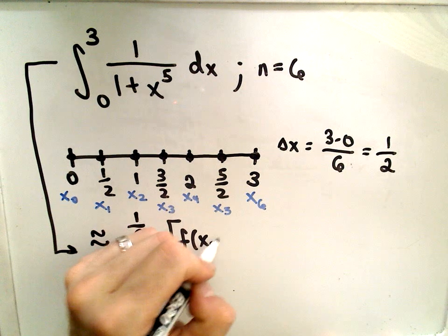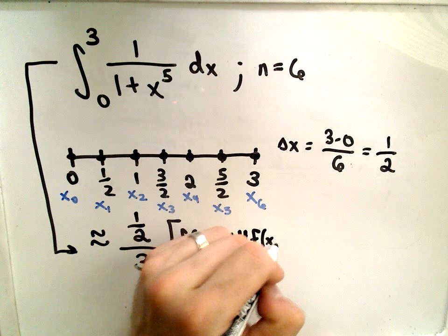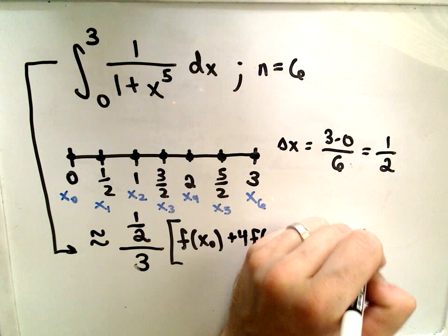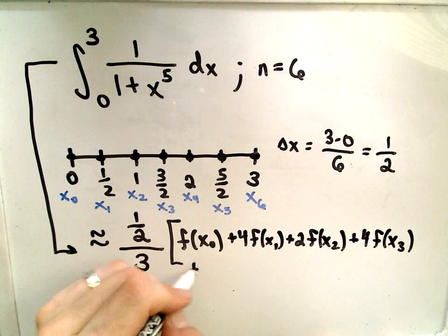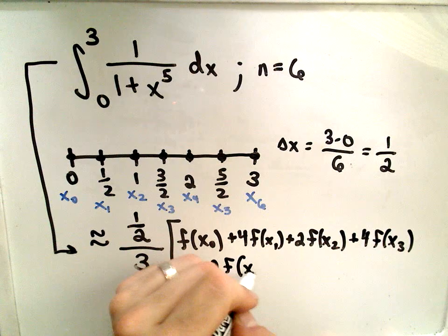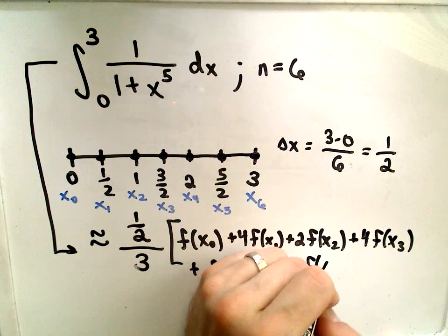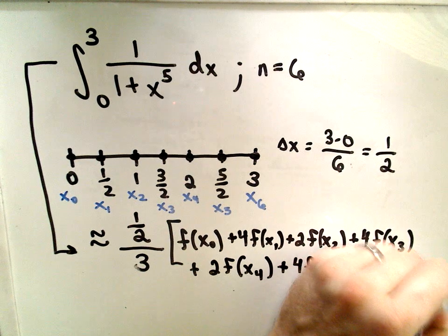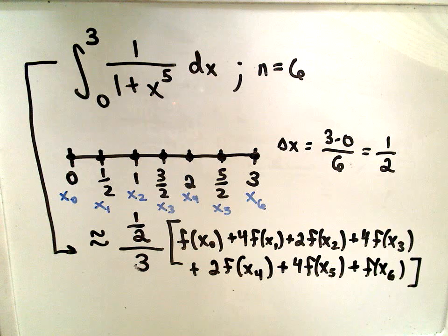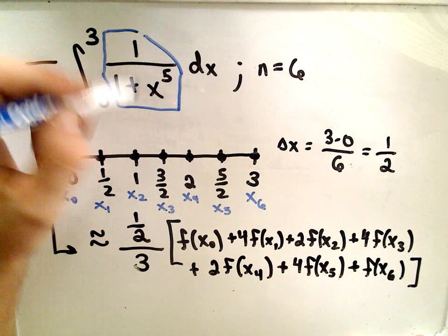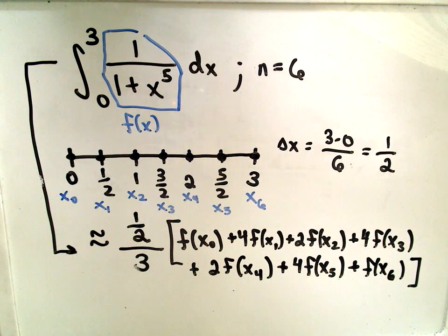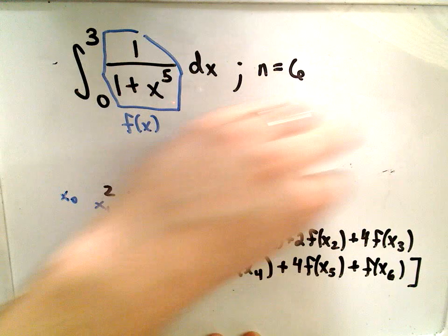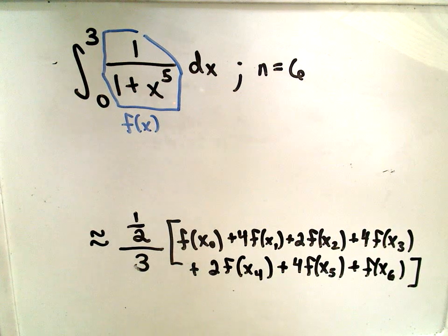Okay. So, we have to take f of x sub 0, and then it says it starts alternating. 4 times f of x sub 1, 2 times f of x sub 2, plus 4 times f of x sub 3, plus 2 times f of x sub 4. Pretty tedious. 4 times f of x sub 5. And then again, on the last point, we don't do anything. We just evaluate it at that point. Alright. Well, again, in this case, we know what our f of x is. It's the function that we're integrating: 1 over 1 plus x to the 5th. That's our f of x value. So, now we're simply just going to have to start computing this. So, let me give myself a little bit more room because I'm going to run out of room here.